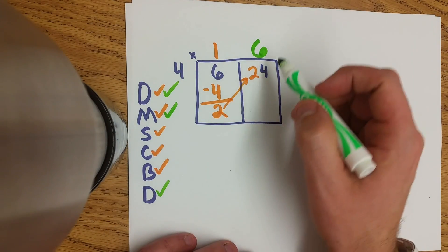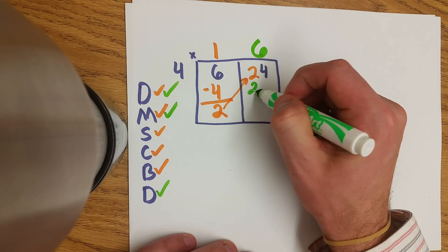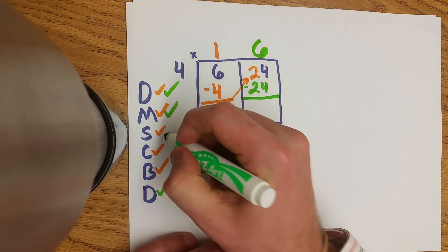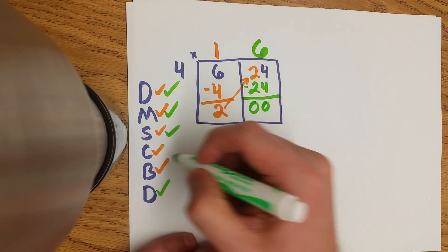Now we have to multiply to prove that. Why 6? Because 6 times 4 gives us 24. Now we subtract that 24. 24 minus 24 equals 0.